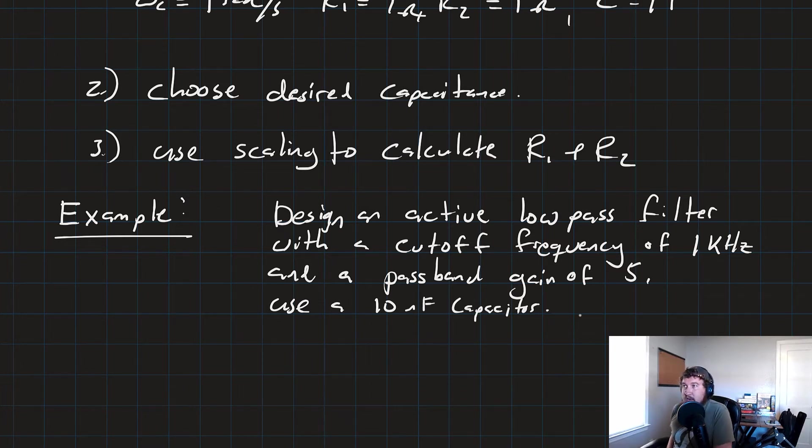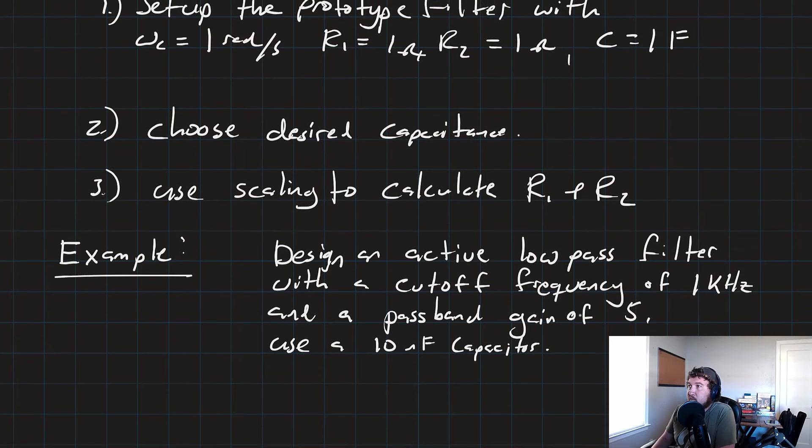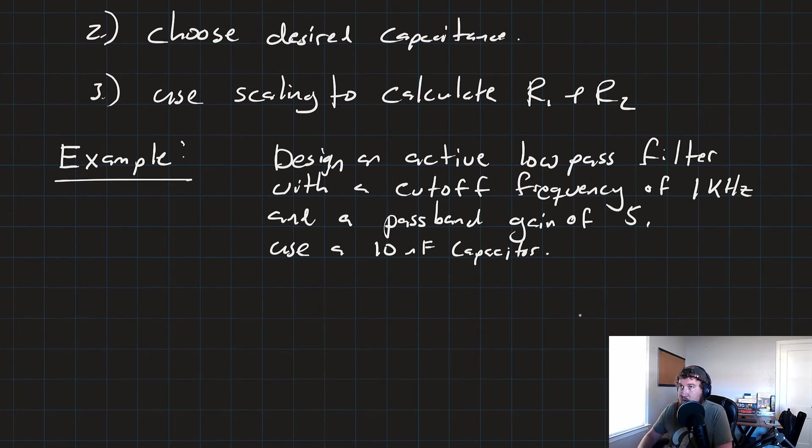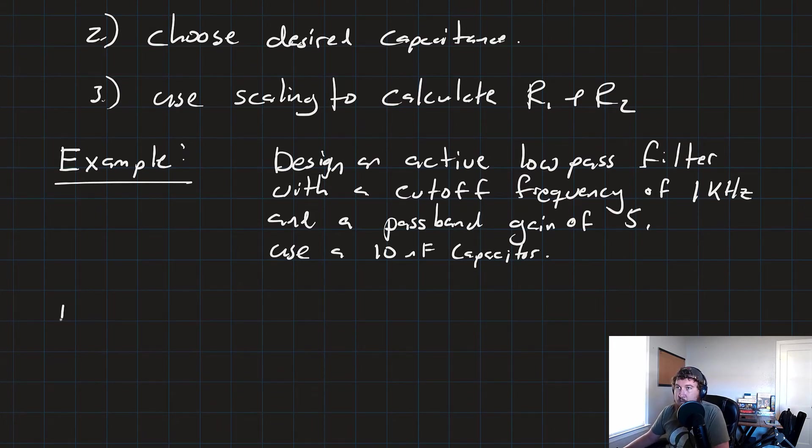Design an active low-pass filter with a cutoff frequency of 1 kilohertz and a passband gain of 5, using a 10 nanofarad capacitor. So the first thing we want to do is set up that prototype filter.